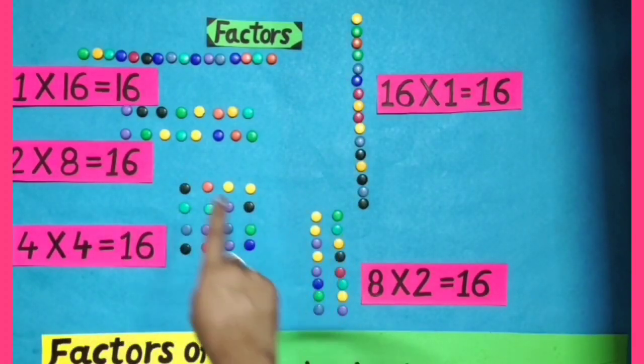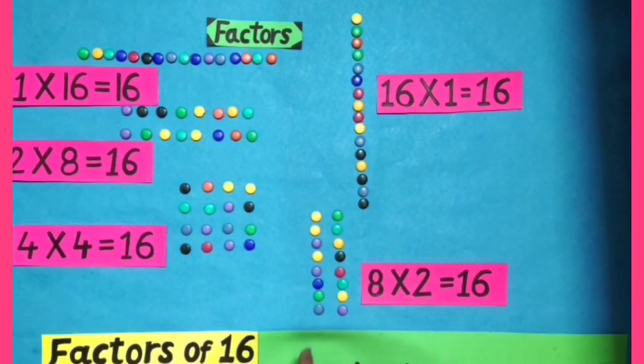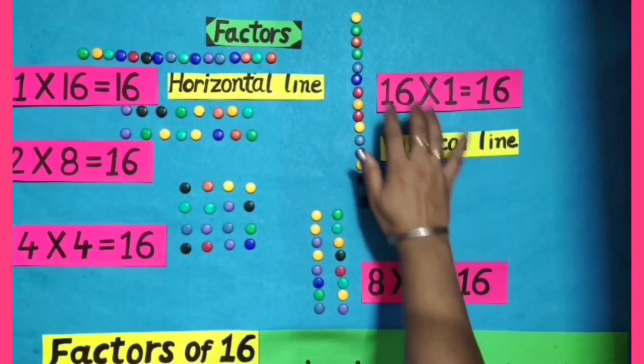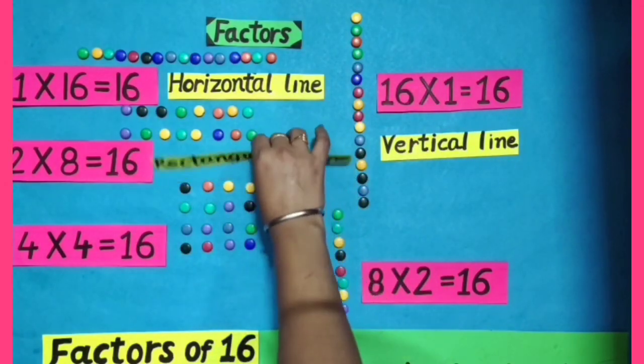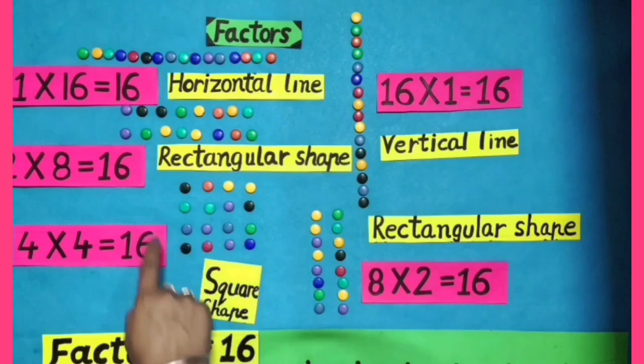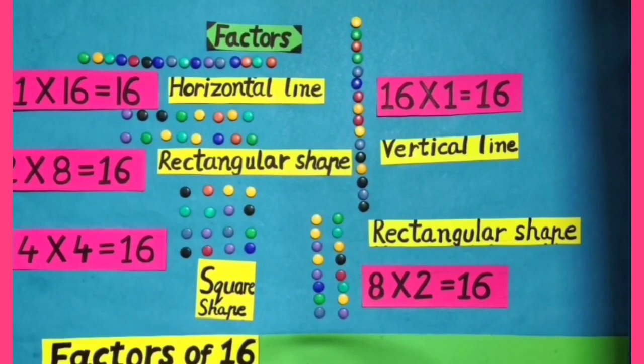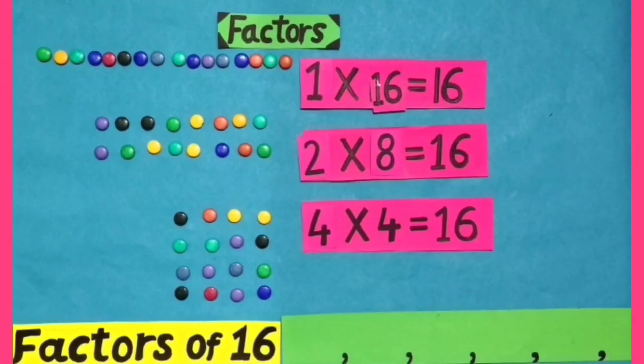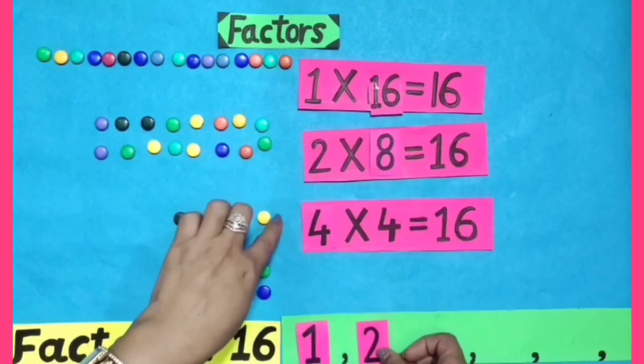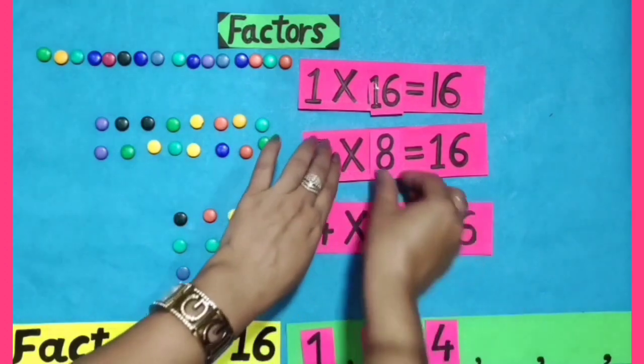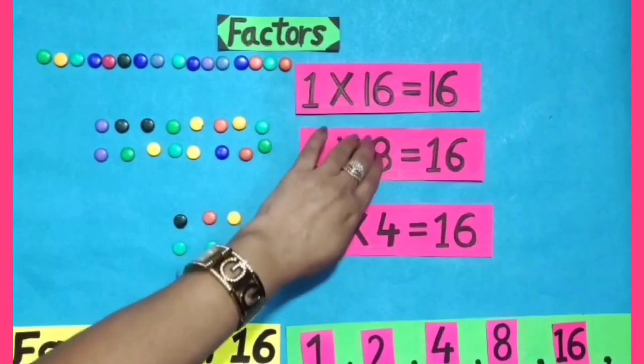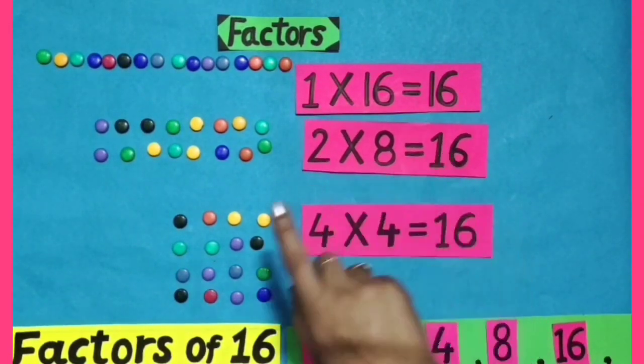Let's do factors of 16. I have arranged these 16 buttons in different ways. Whenever we get a horizontal line, a vertical line, rectangular shape, or a square shape, we get factors of 16. So, factors of 16 are 1, 2, 4, 8, and 16. You have learnt doing factors of 16.